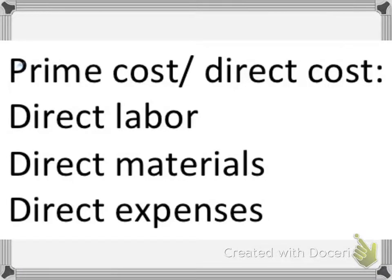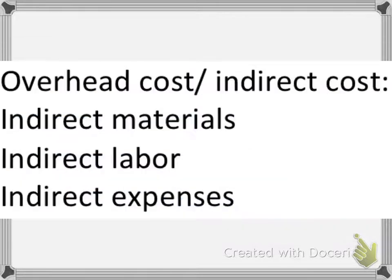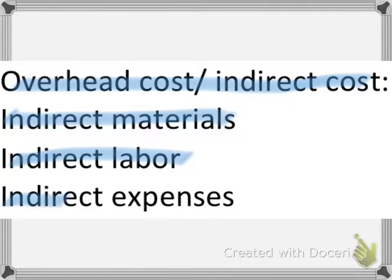Now we'll look at what comes under prime cost and direct cost. Direct costs are the costs which are directly linked to the production process. These include direct labor, direct materials, and direct expenses. Under overhead cost or indirect cost — these are costs not directly linked with the production process — we have indirect materials, indirect labor, and indirect expenses.